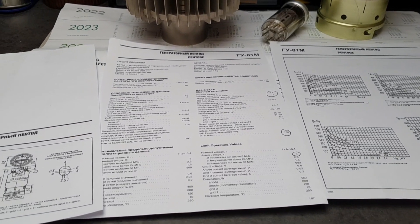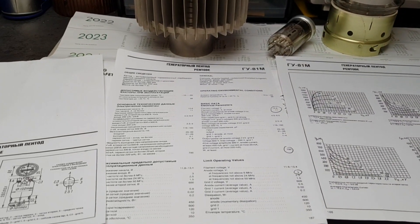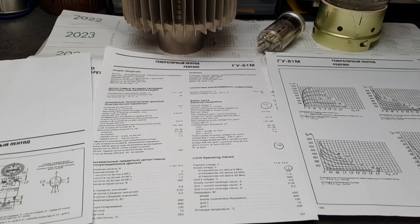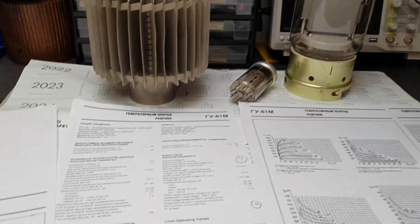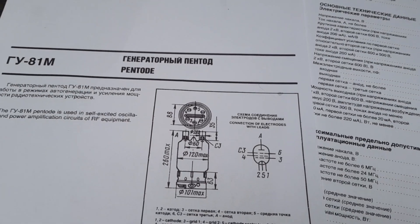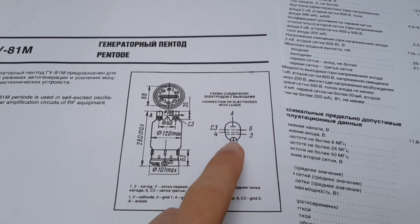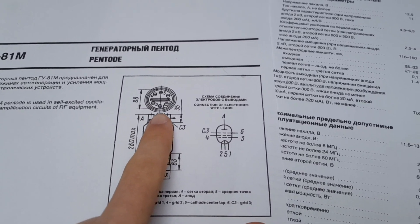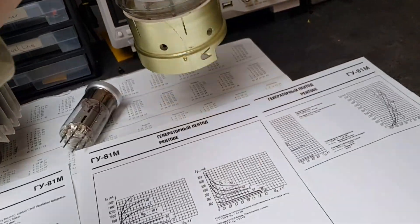So now that you've chosen your tubes, how can we choose all the other components? Before we can start to choose the other components, let's start to look into the data sheet of the tube. In my case I will use the GU-81M as an example.